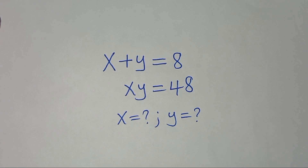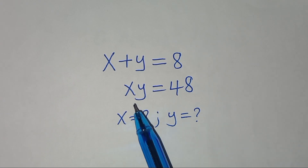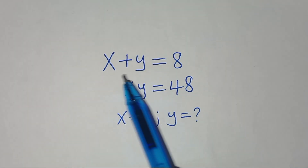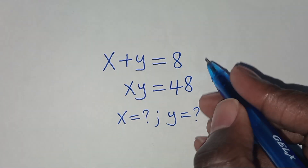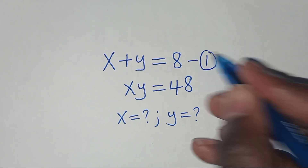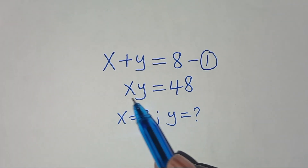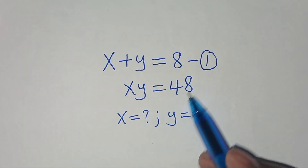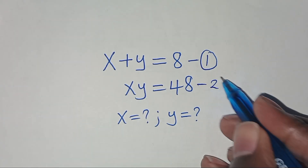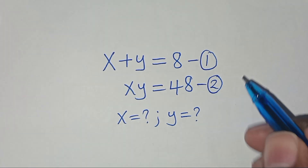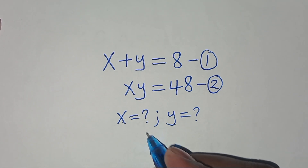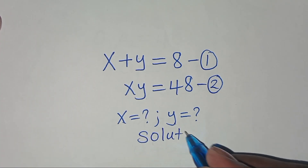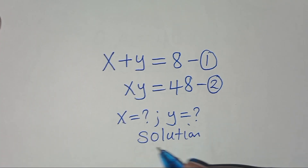We are going to solve this algebra problem. We have x plus y equals 8, let's call this equation 1, and x times y equals 48, let's call this equation 2. We need to find the values of x and y. Let's start the solution.